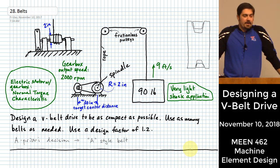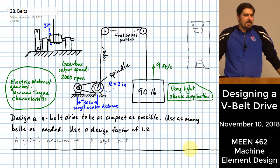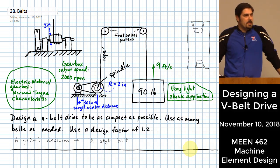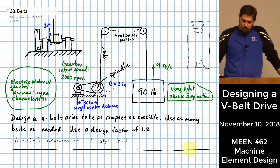Today we're going to talk about one of the ways that we can transmit power, and that is through flexible elements. That's actually the title of this chapter: Flexible Mechanical Elements. What we're going to do is pick off one example of a type of element we can use to transmit power, and today we're essentially focusing on something called a V-belt.